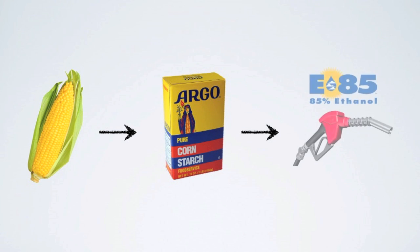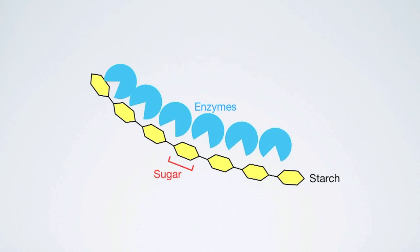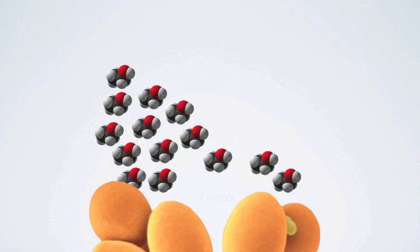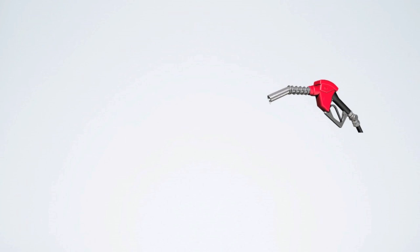Plants produce starch, which can be used to make biofuels. Here's how the process works. Starch is a long chain of glucose sugars. Enzymes break down the chain and yeast ferment the sugars into ethanol. The ethanol is then blended with petroleum to be put into your car.